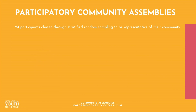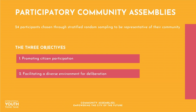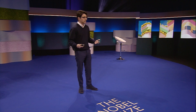In the method that we designed, 24 participants are selected through stratified random sampling to be representative of the local communities. Their objective is threefold. First, community assemblies open up a new way for citizens to engage in democracy beyond the ballot. Second, by facilitating a diverse environment for deliberation, participants get to focus on solving issues through specific policies rather than engaging in broad party politics. Third, group thinking with participants of diverse backgrounds will inevitably lead to better decisions, which means better policies that are more responsive to the local community.